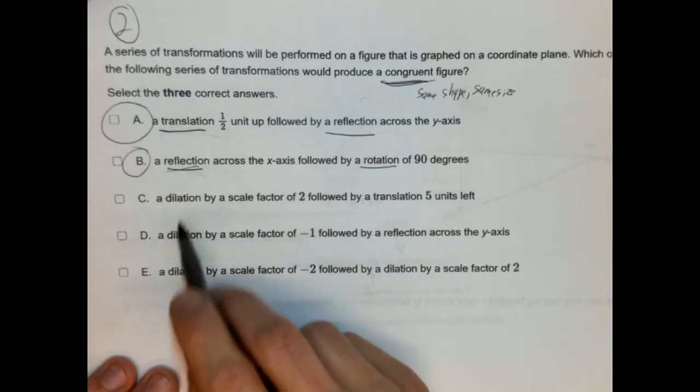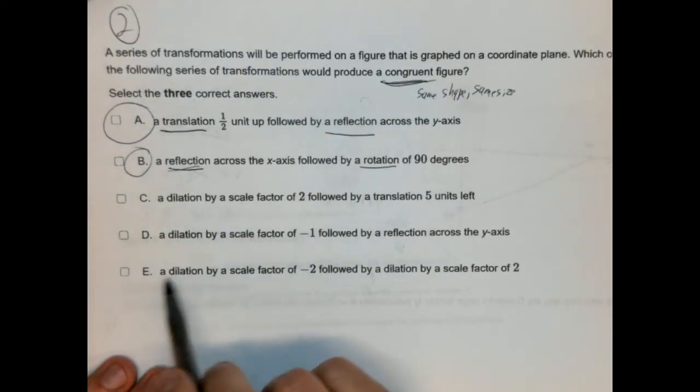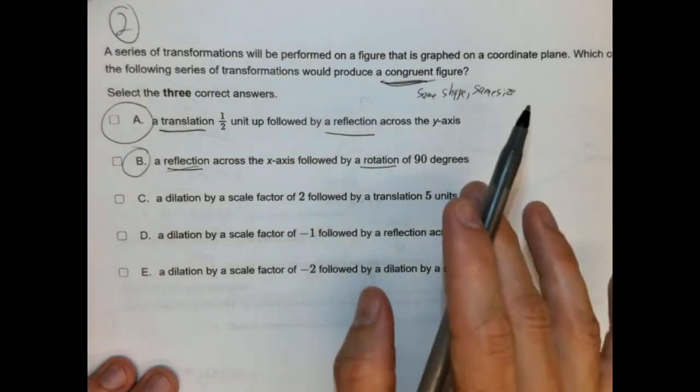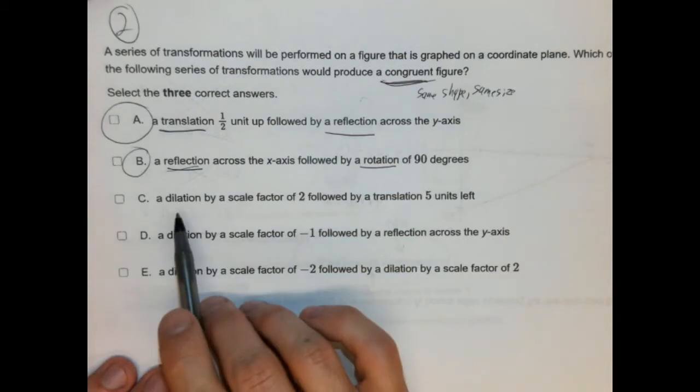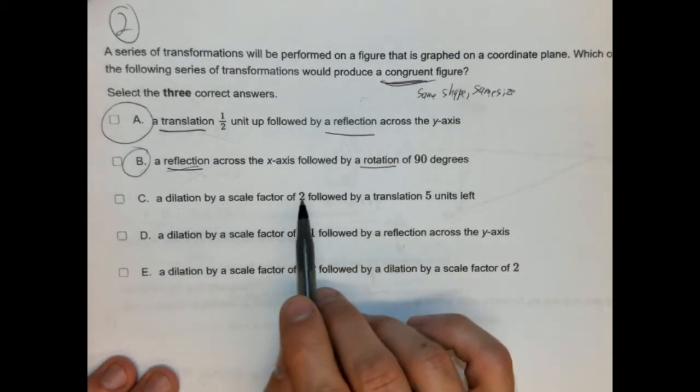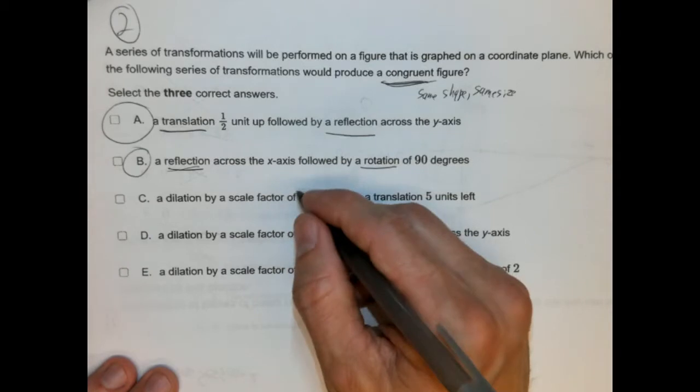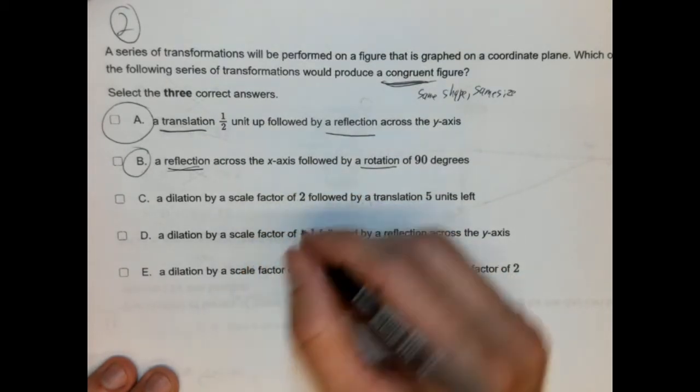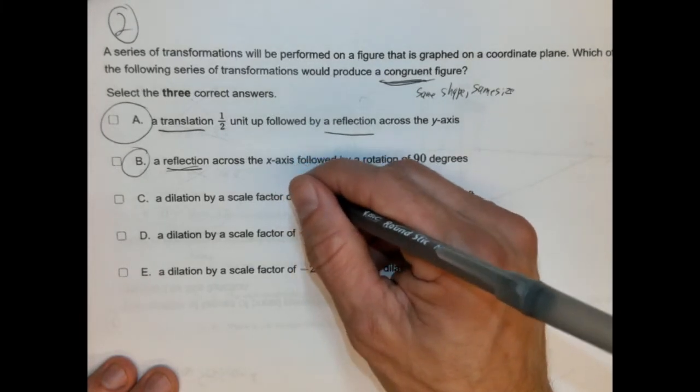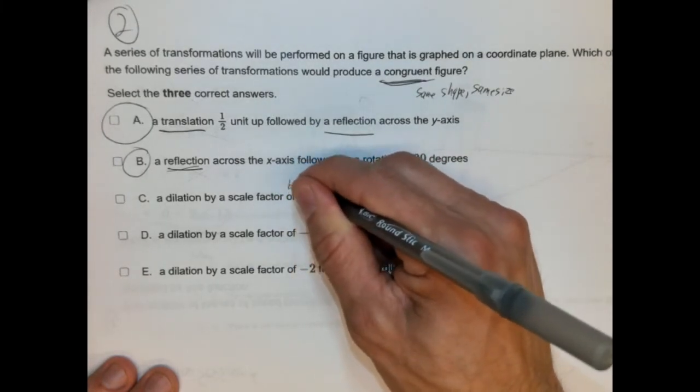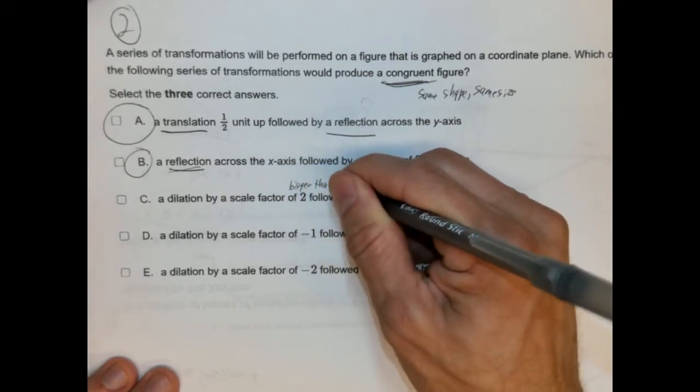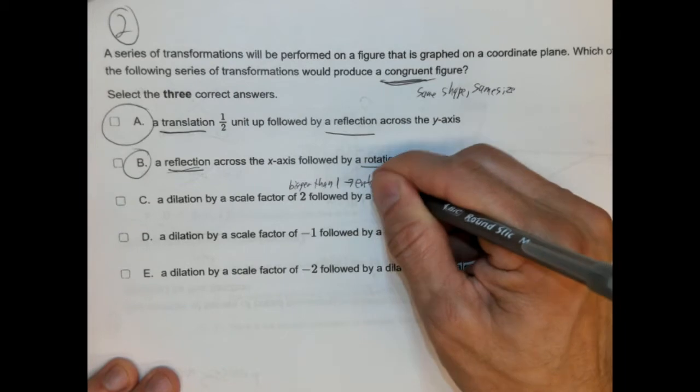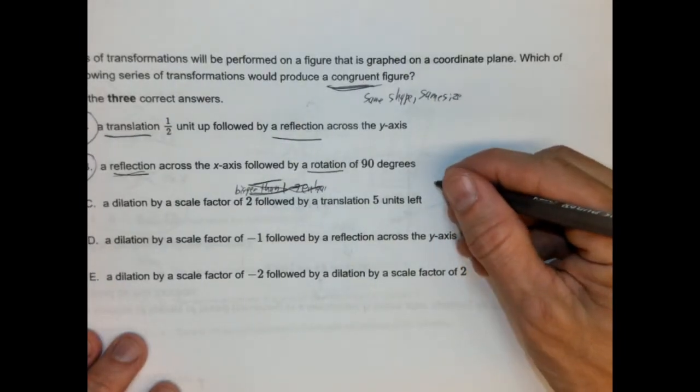Now, we start seeing that these three have dilations. We know one of them has to be correct. So, I'll show you which one that most people are going to pick incorrectly. A dilation of a scale by a scale factor of two followed by a translation of five. So, this, because it's a, the scale factor is larger than one. So, bigger than one, right? If it's bigger than one, it's going to be an enlargement.